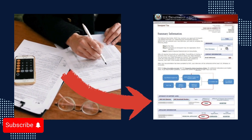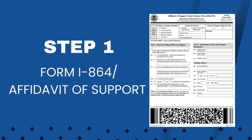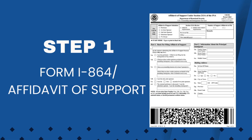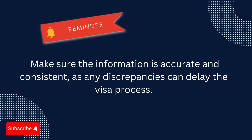Step one: Form I-864, or Affidavit of Support. The main form you'll need is Form I-864, also called the Affidavit of Support. The joint sponsor or co-sponsor must complete this form. It's a legally binding document that states that the sponsor will financially support the immigrant if necessary. Make sure the information is accurate and consistent, as any discrepancies can delay the visa process.